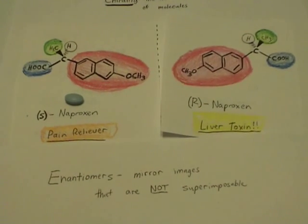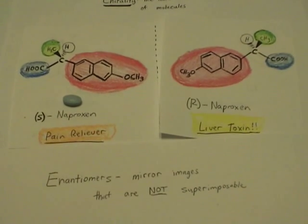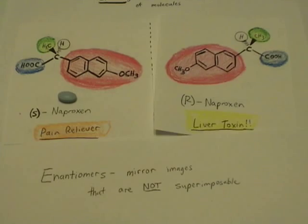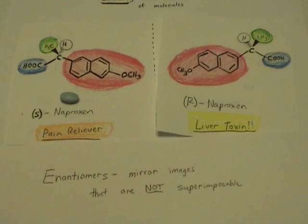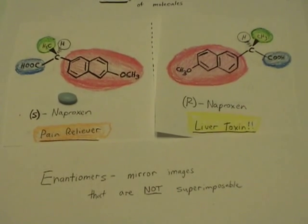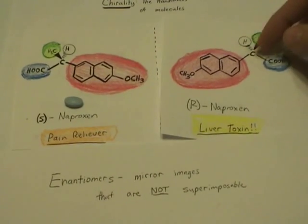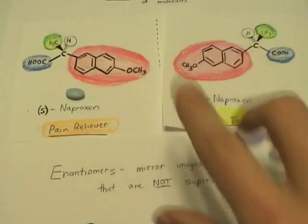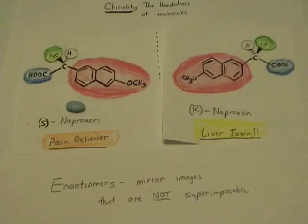We call these two different molecules — S-naproxen and R-naproxen — enantiomers. We call them enantiomers because they're stereoisomers, meaning they're isomers with the same molecular formula but different structure. More specifically, they're stereoisomers, so they are different compounds specifically because of the arrangement of the atoms in space. They have the same bond-to-bond connectivity, but the different arrangement in space makes them stereoisomers. Enantiomers are stereoisomers that are mirror images of one another, and they're not superimposable.